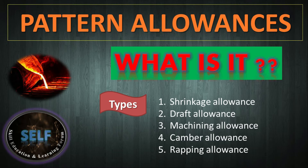But a pattern is not made exact to the required casting size. It carries some allowances, like shrinkage allowance, draft allowance, machining allowance, camber allowance, and wrapping allowance. We will discuss these allowances in subsequent slides.